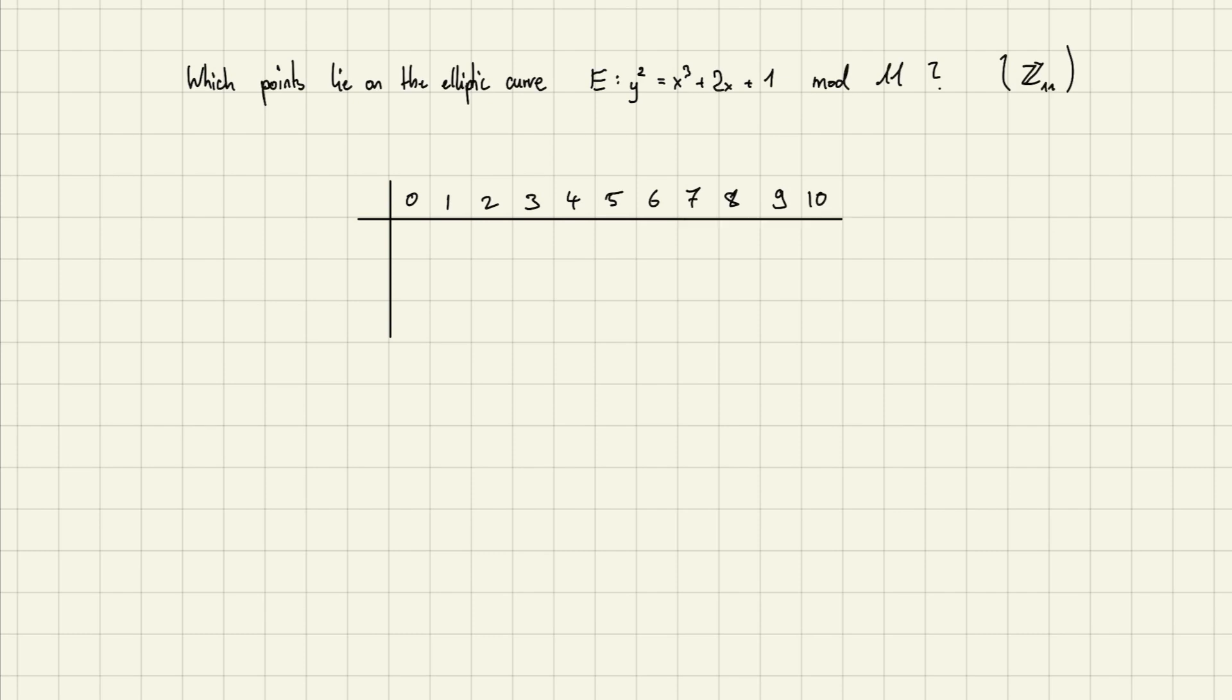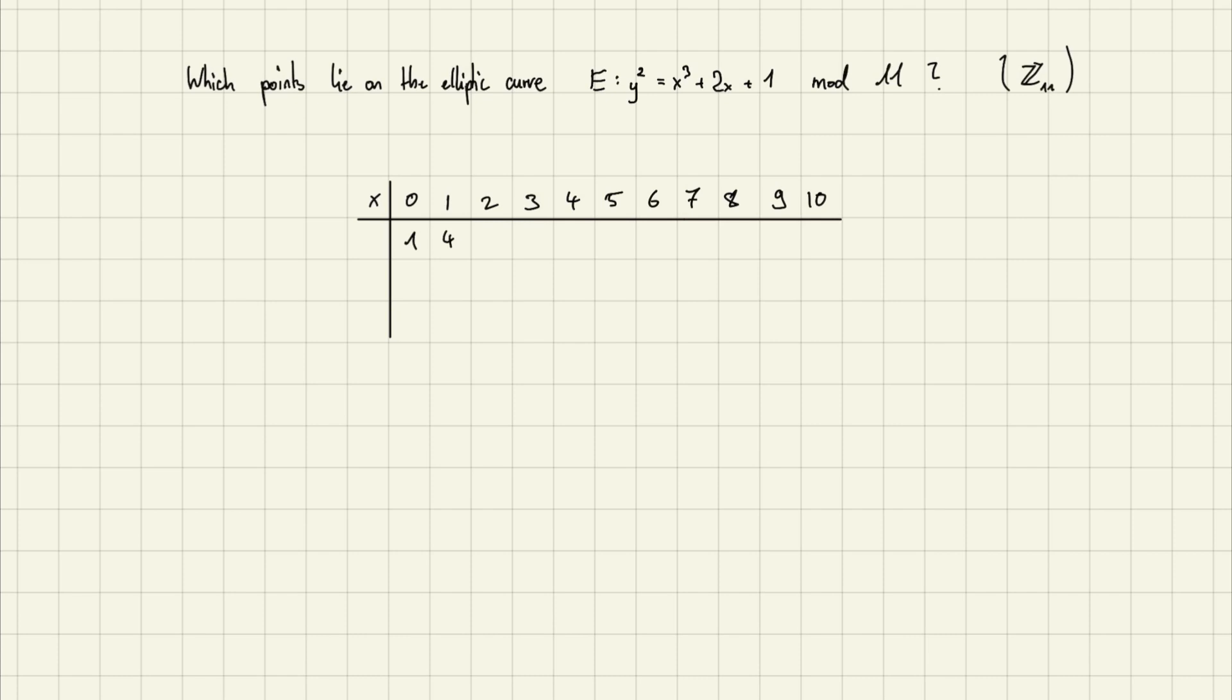And that way we can just calculate this side of the equation. For example, for 0 it's 1, for 1 it's 4, for 2 it's 2, and for 3 it's 1. That's fairly simple.